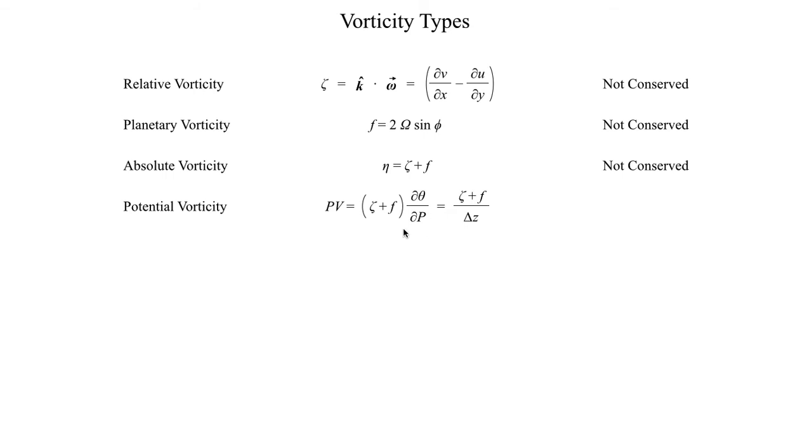Now, the special thing, the reason why potential vorticity is even used in the first place is the fact that it is a conserved quantity in the atmosphere. And sometimes you'll also hear this referred to as barotropic potential vorticity. Barotropic processes are kind of involved here, but not really.